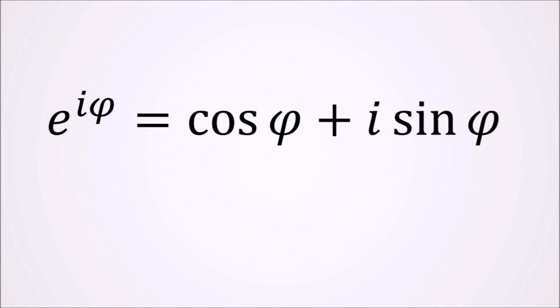So E to the power of i times phi equals cosine of phi plus i times sine of phi.